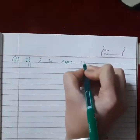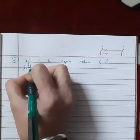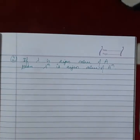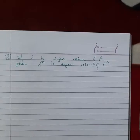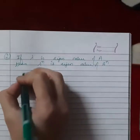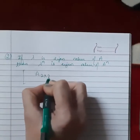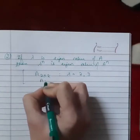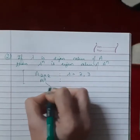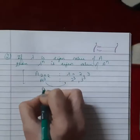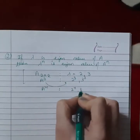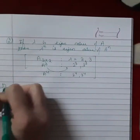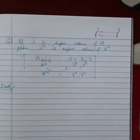Result number 2 says that if lambda is an eigenvalue of A, then lambda raised to power n is an eigenvalue of A raised to power n. For example, if a 2x2 matrix has eigenvalues 2 and 3, then the eigenvalues of A cubed will be 2 cubed and 3 cubed, and eigenvalues of A to the power 4 will be 2 to the power 4 and 3 to the power 4. We will prove this by mathematical induction.